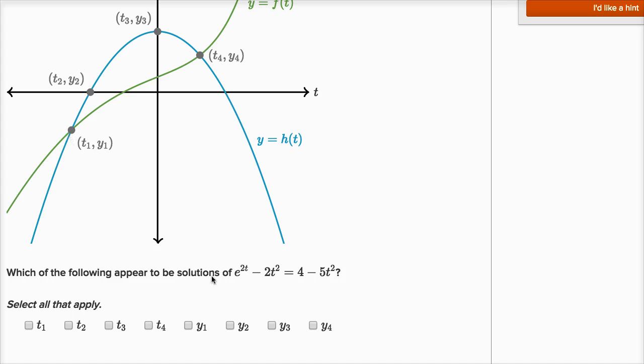So f of t is going to be equal to h of t at t is equal to t1. And we see that there because it's a point of intersection. Now let's keep on going.